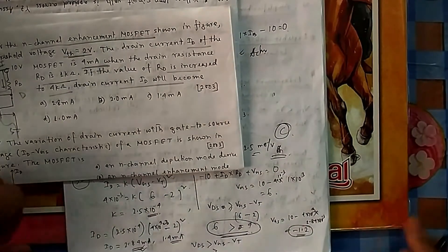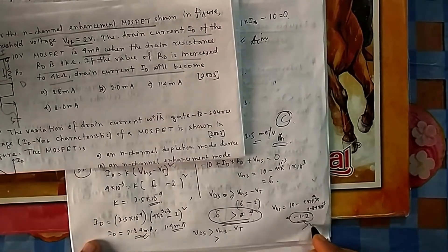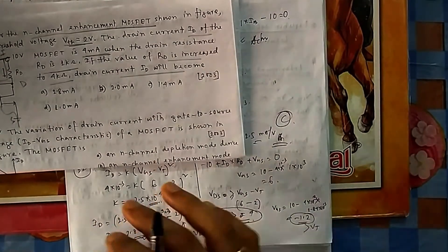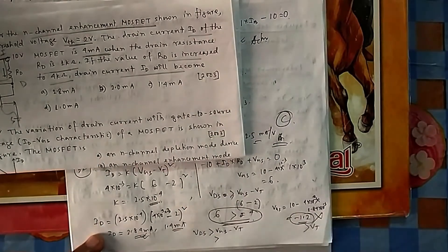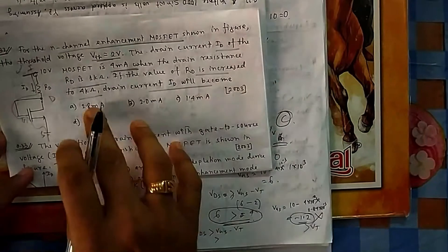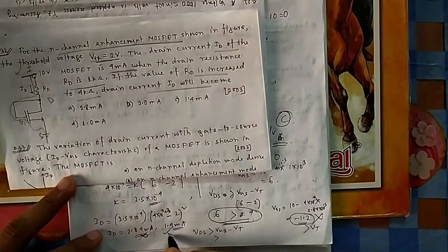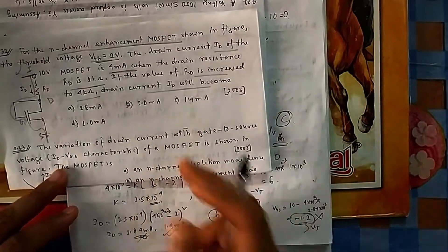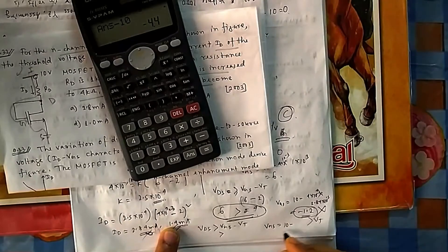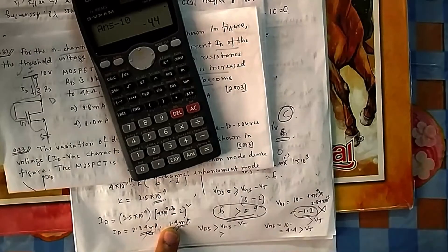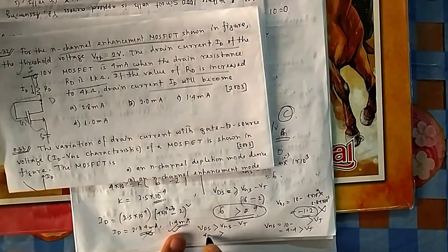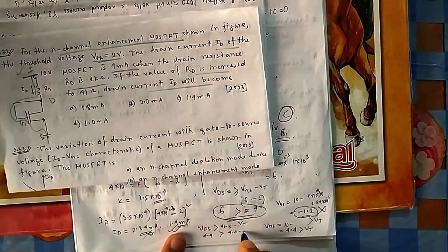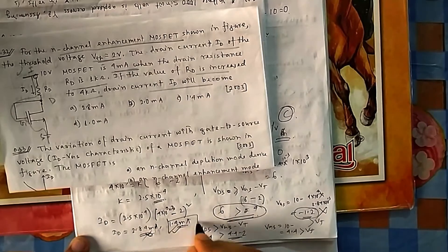For I_D = 1.4 mA: V_GS = 10 − (1.4×10⁻³ × 4×10³) = 10 − 5.6 = 4.4 V. Since 4.4 V > V_T = 2 V, the device is on. Also V_DS = 4.4 V and V_GS − V_T = 4.4 − 2 = 2.4 V; since 4.4 ≥ 2.4, saturation is confirmed. So I_D = 1.4 mA is the correct answer.